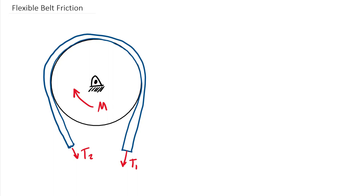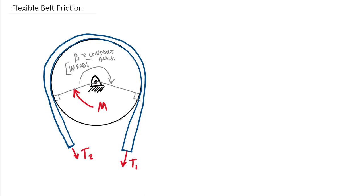Another thing that's really important in this concept of flexible belts is the contact angle. The contact angle basically goes from where the belt leaves the pulley at a tangent line on one side to where the belt leaves the pulley on the other side. We measure this angle — this contact angle beta. One hundred percent of the time this contact angle is in radians. If you do not put it in radians you will get the wrong answer, because the equations are derived always having that in radians.